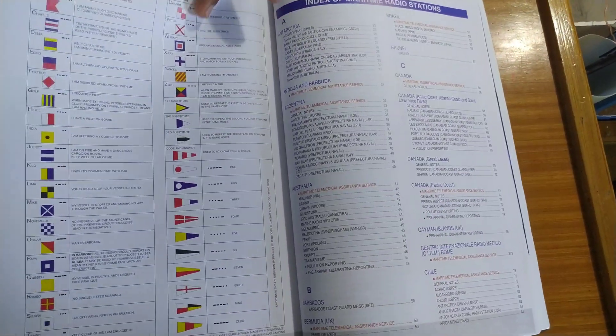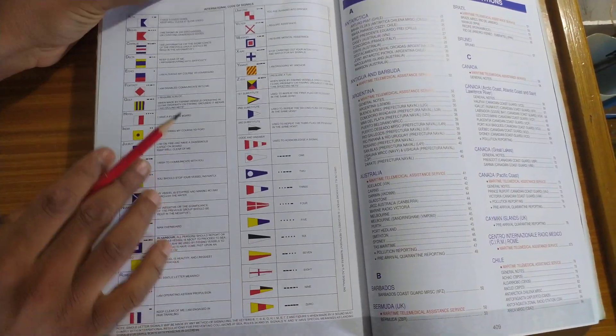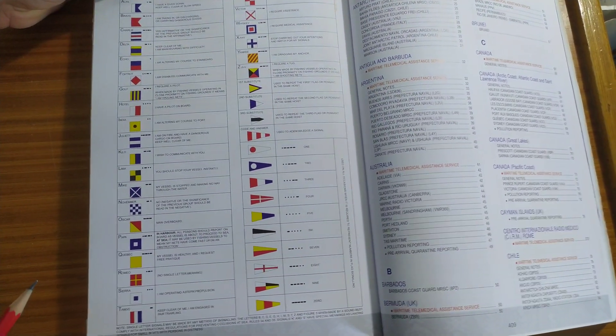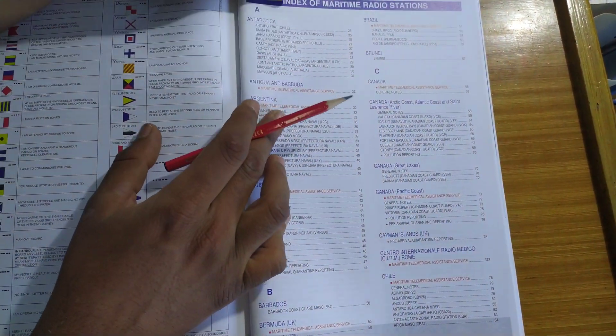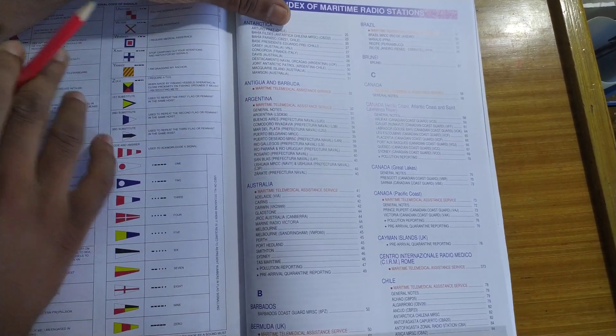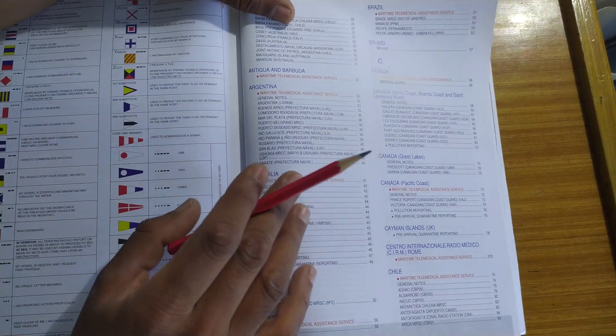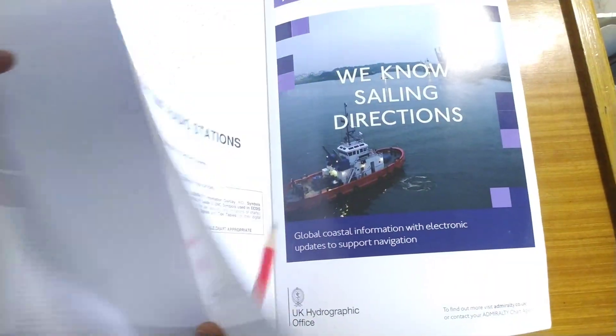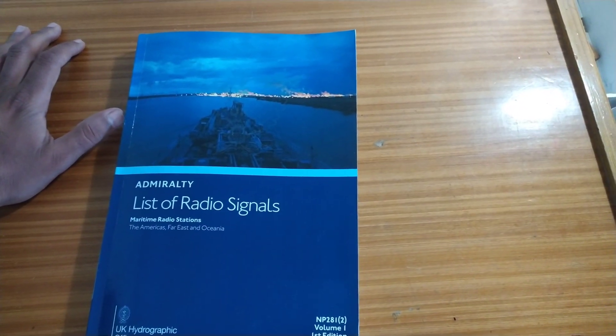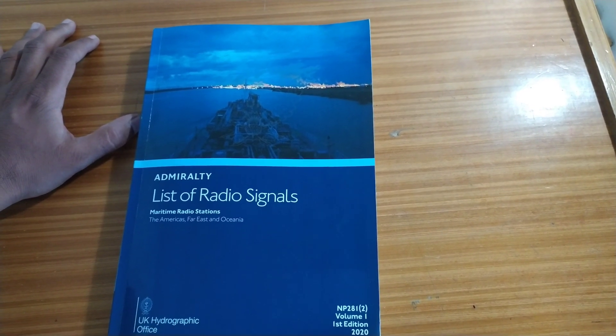After this is the phonetic alphabet and figure code - basically how to spell out or call a numeral or an alphabet. And finally, the international code of signals, all the flags. After this comes the index of maritime radio stations. This is basically the index of all the radio stations you saw in the forward of this book. Finally it will come to notes - these are pages for notes. That's how this book is used. I hope you got a good understanding of how to use 281. Thank you for watching.